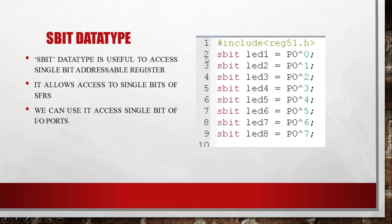Here is the sbit data type. The sbit data type is useful to access single-bit addressable registers. It allows access to single bits of SFRs. We can also use it to access single bits of IO ports. Meaning, when I write: sbit LED1 = P0^0, I have assigned port 0's first pin to LED1 using sbit — single bit, not the whole port, only a single bit. You can use this to assign a single bit of either SFRs or IO ports.